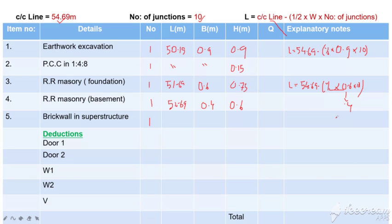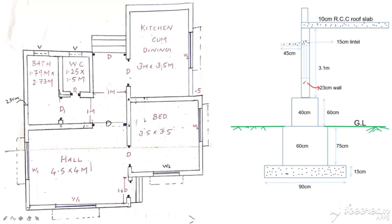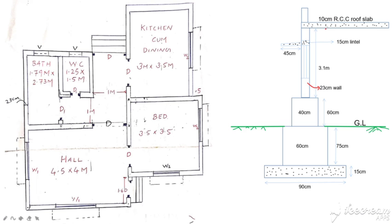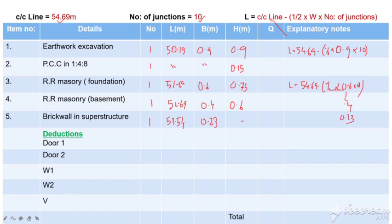The width is 0.23. The width is 0.23, and the height is 3.1 meters, with width 0.23.